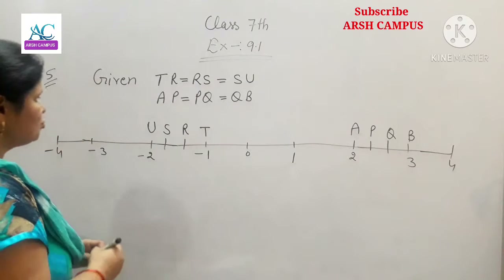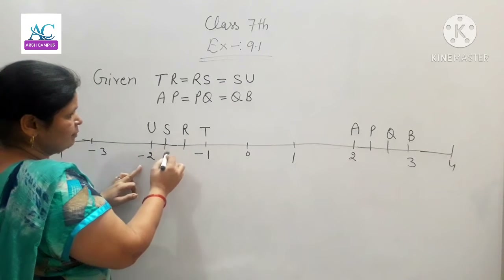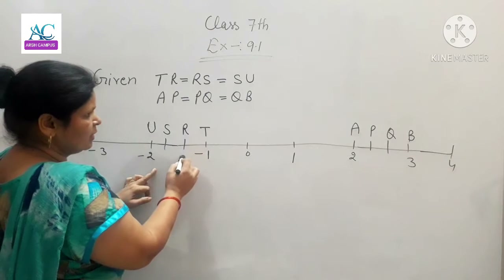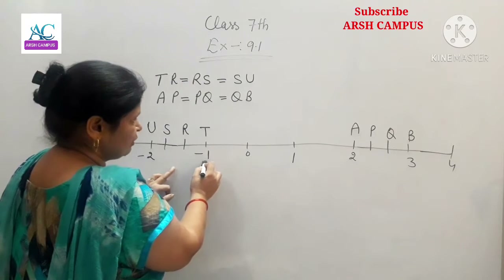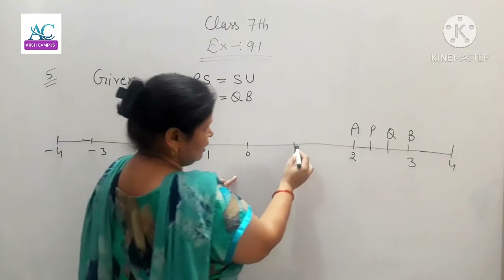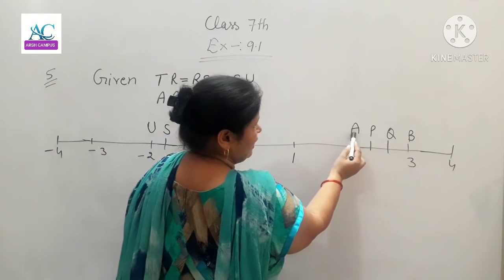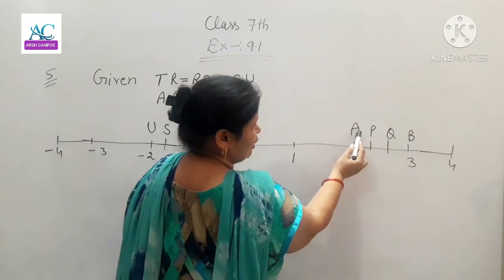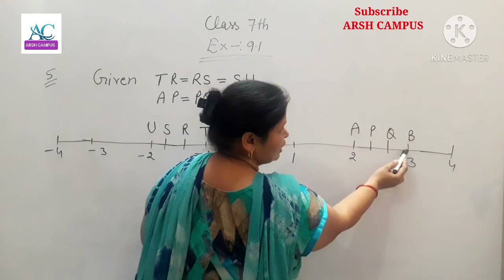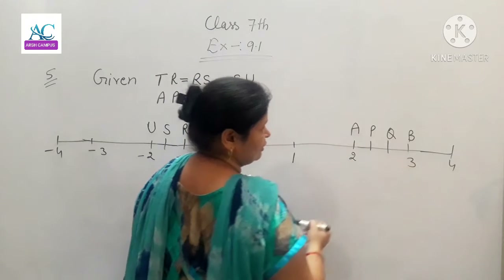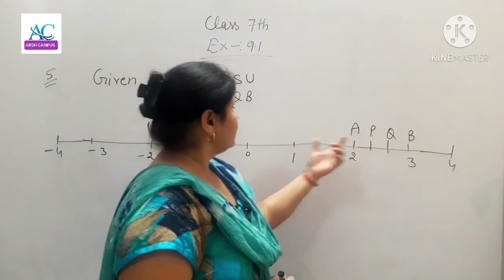Amara U point jo hai woh minus 2 pe hai. S batana hai kahan hai, R batana hai kahan hai. T point minus 1 pe hai, yeh amari 0 hai, yeh 1, yeh 2. A jo hai woh 2 number pe hai. P, Q ameen batana hai. B jo hai woh 3 number pe hai.